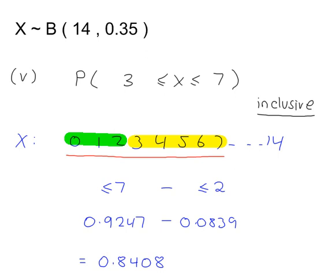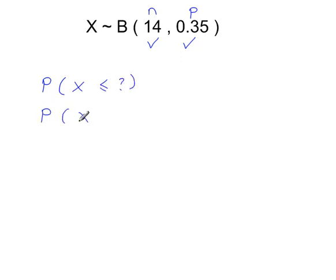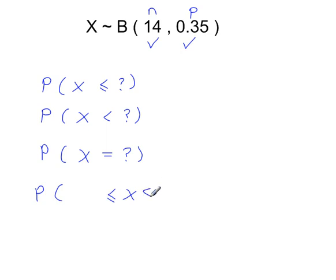What we've looked at here is a binomial distribution where N and P are both in the probability tables. We've worked out probabilities of the form: less than or equal to, strictly less than, equal to, and between two values. Have a look at my next video for more examples and practice. Thank you.